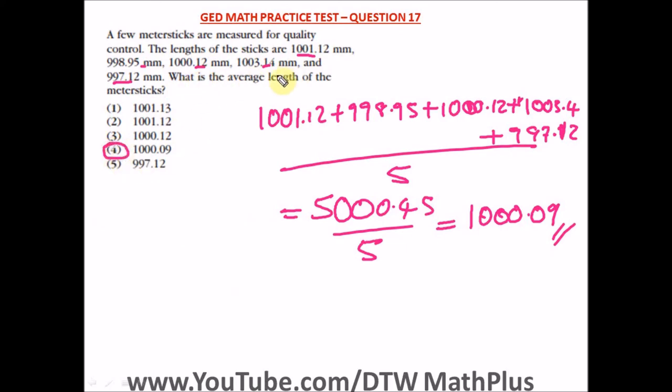So this is quite straightforward. It's just asking for the average length and the average length is the sum of all the lengths divided by the number of lengths which is 5. So our right option here is option 4.